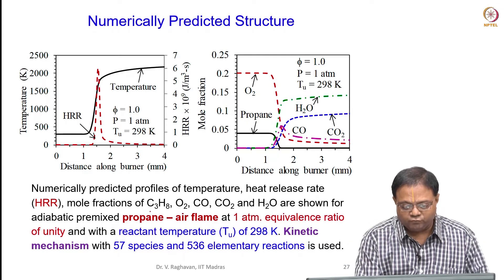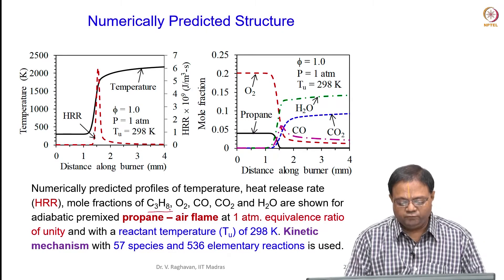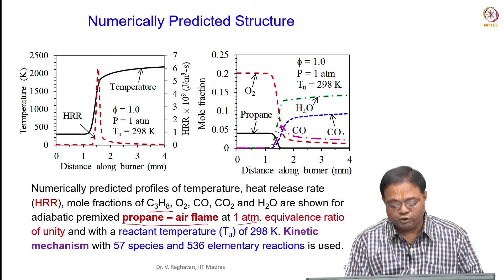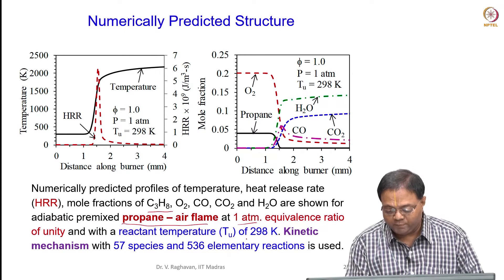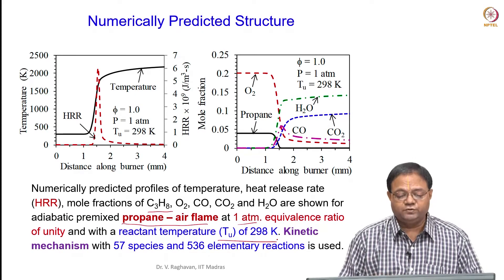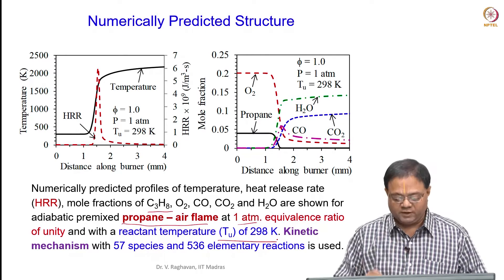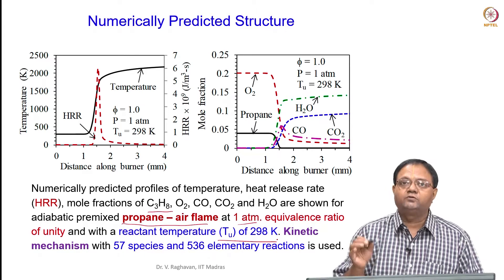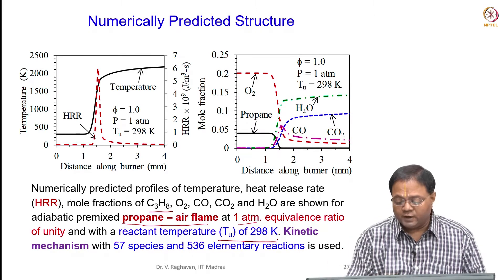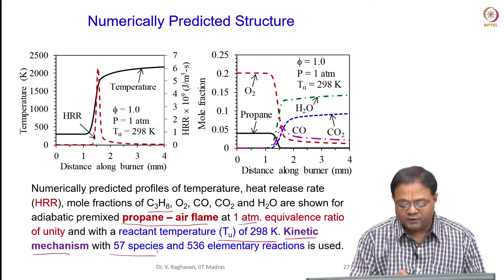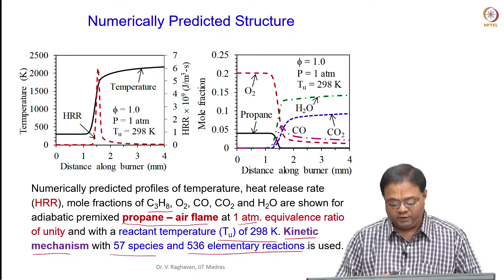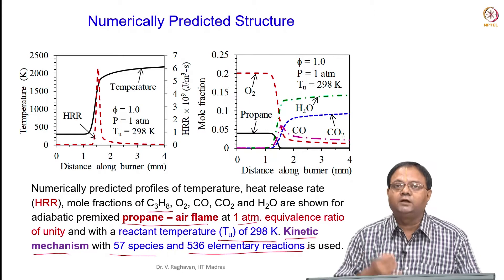For example, in this case we have solved for a premixed propane-air flame at one atmospheric pressure, with the unburned gas temperature at 298 Kelvin. Under these conditions, the one-dimensional flame structure has been numerically predicted by solving the energy equation and species conservation equations using a kinetic mechanism having 57 species and 536 elementary reactions — a comprehensive reaction mechanism.